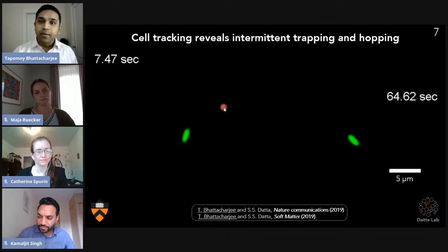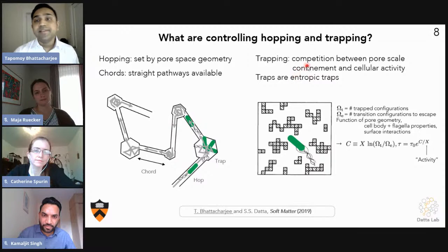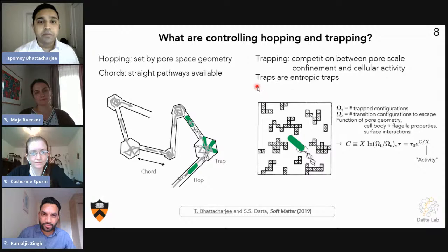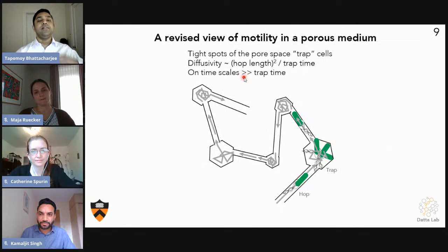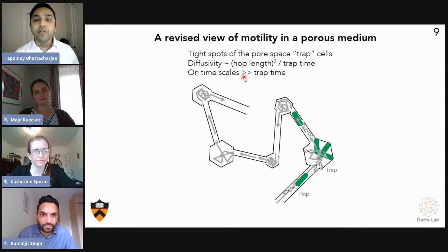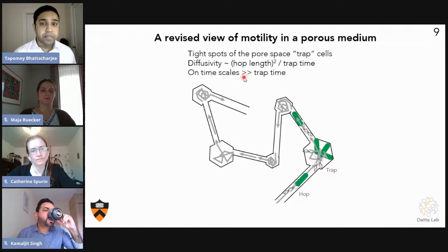What sets this hopping and trapping? Turns out, hops are set by pore space geometry. Cells hop when they find a directed pathway in the pore space. However, traps are set by both pore scale confinement and cellular activity. We can model the system by considering the traps as entropic traps. Now we can measure the hops and traps separately. What we are proposing is the long-term diffusivity of bacteria is not given by their run-and-tumble motion anymore. It should be given by the hop length squared over trap time, because hops are when cells make most of the move and traps are when they spend most of the time.